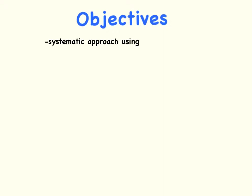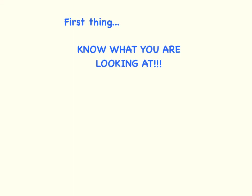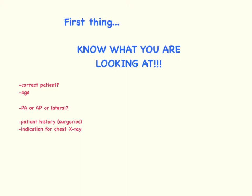The objectives of this talk are to show you a systematic and easy-to-remember method to evaluate chest x-rays, using the A, B, C, D, E method, which I'll explain further. At the end, I have two x-rays of common pediatric findings that we will evaluate together. The very first thing you need to do is make sure you're looking at the correct patient, know what type of film you're looking at — AP, PA, or lateral — and know the patient's history, especially any cardiac or pulmonary surgeries, and the indication for the chest x-ray.